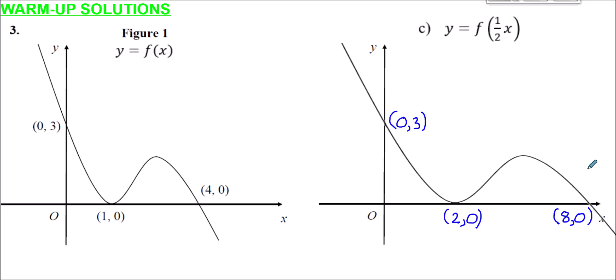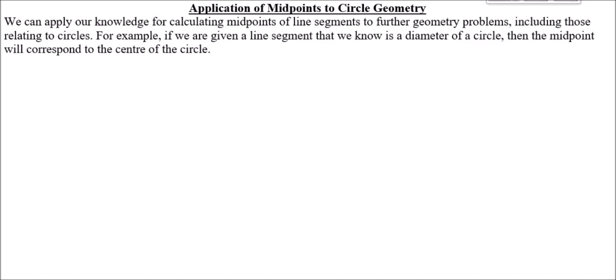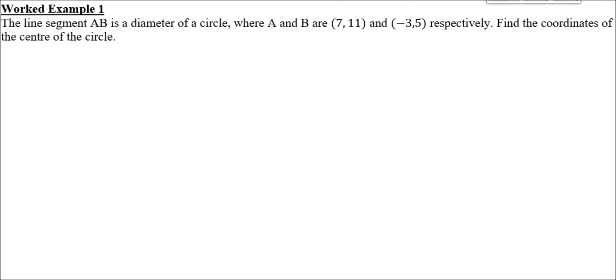We can now move on to circle problems, applying things we've learnt from coordinate geometry and straight lines. For example, we can think about midpoints of line segments. If a line segment is a diameter of a circle, we can work out its midpoint, which corresponds to the centre of the circle. For instance, if AB is a diameter where A is (7, 11) and B is (−3, 5), we can find the centre by finding the midpoint of AB.